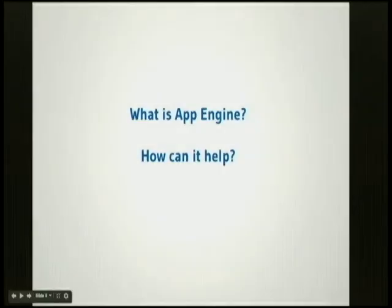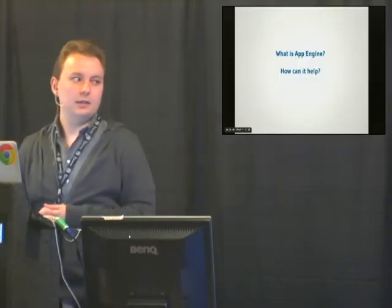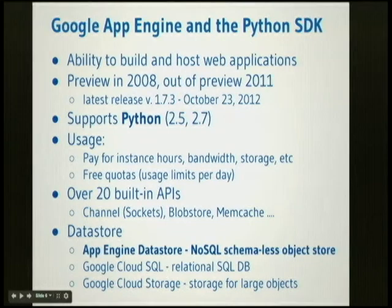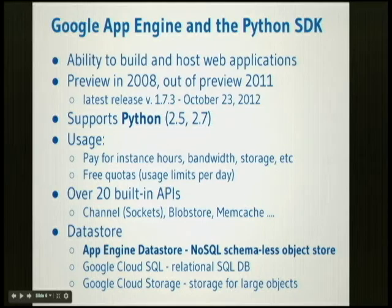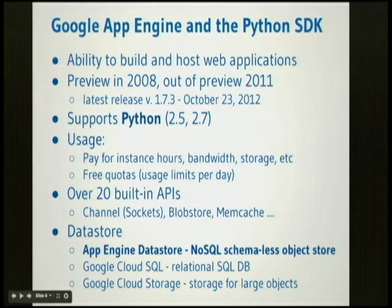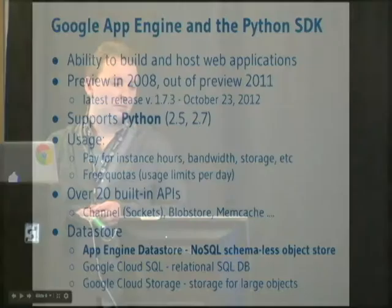I decided to use App Engine and see how fast I could make a clone of the GatherAt app. Just a background for those who don't know: Google App Engine lets you build and host applications in Google's cloud. It was in preview in 2008, out of preview in 2011, and supports 2.5 and 2.7 runtimes. You pay for instance hours, bandwidth, and storage, and you also get free quotas — daily limits — with up to 10 applications for free. For the Python SDK alone, there are over 20 built-in APIs, including a blob store, channel API (which is like a socket API), three data stores, and an important NoSQL object store.